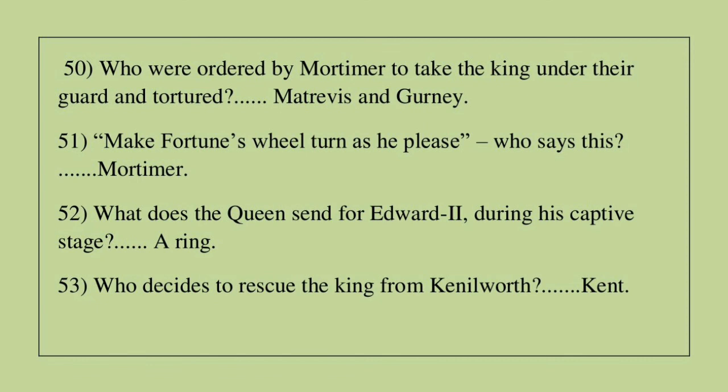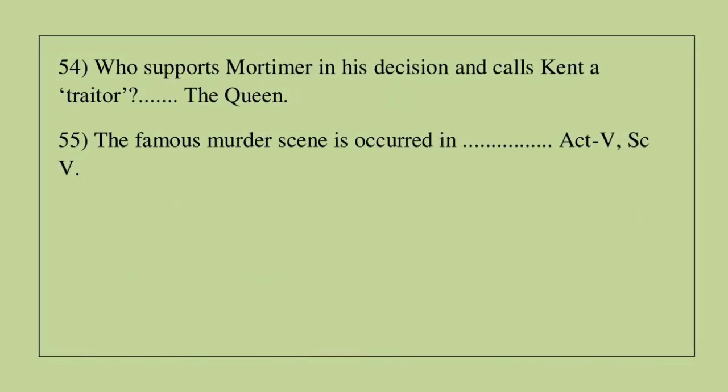Question 50: Who were ordered by Mortimer to take the king under their guard and torture him? The answer is Matrevis and Gurney. Question 51: 'Fortune's wheel will turn as she pleases.' Who says this? The answer is Mortimer. Question 52: What does the queen send for Edward II during his captivity? The answer is a ring. Question 53: Who decides to rescue the king from Kenilworth? The answer is Kent. Question 54: Who supports Mortimer in his decision and calls Kent a traitor? The answer is the queen. Question 55: The famous murder scene occurs in Act 5, Scene 5.